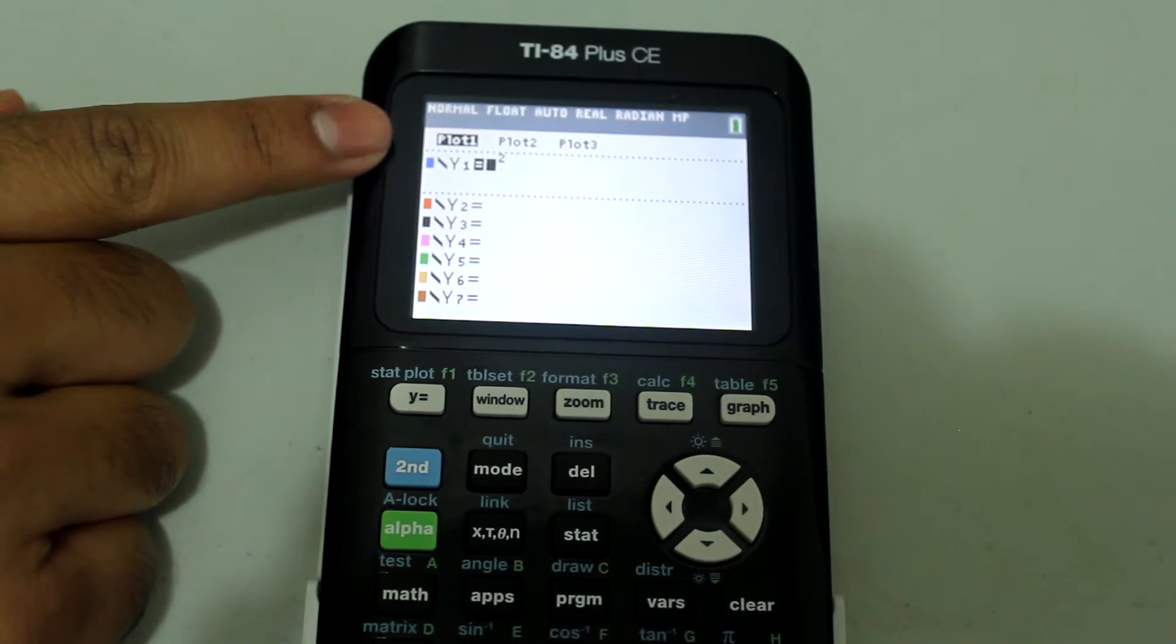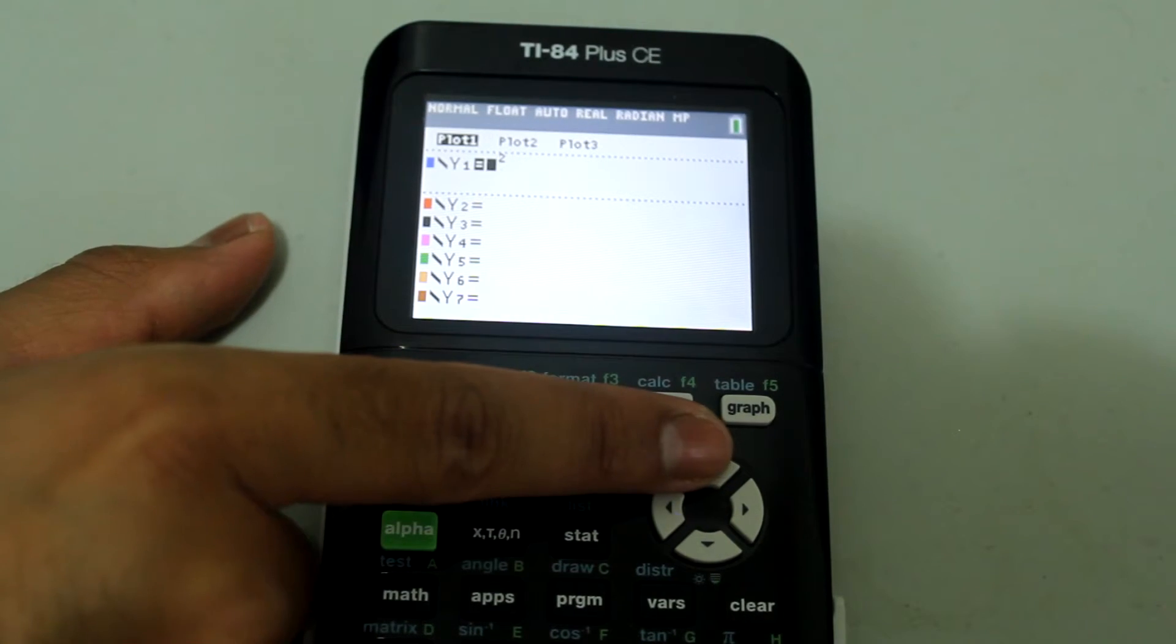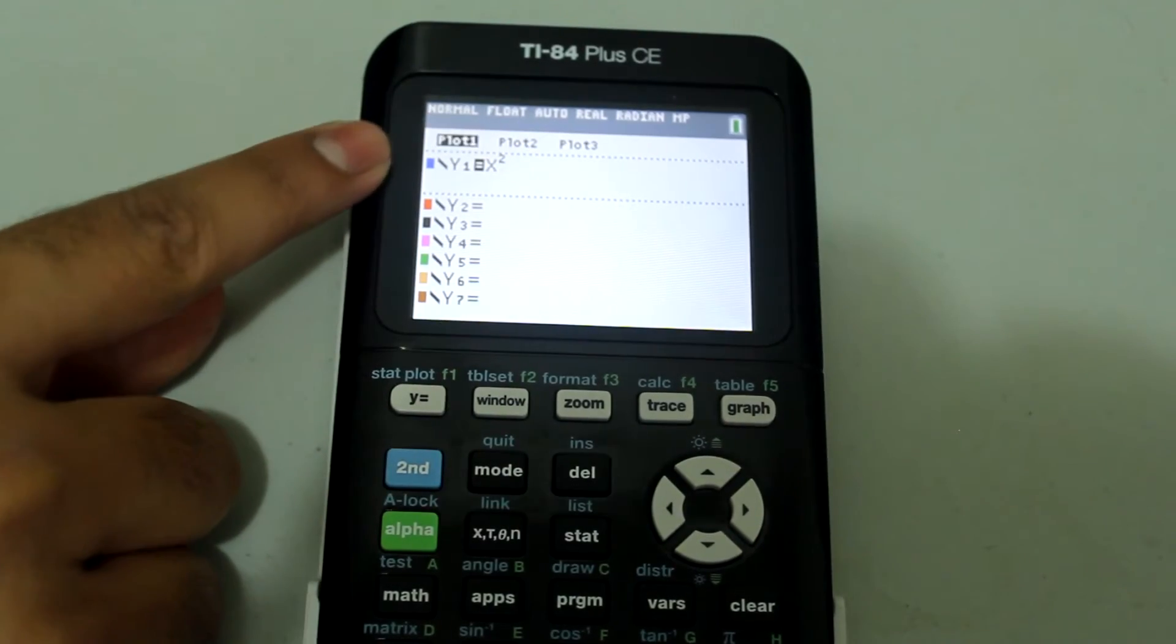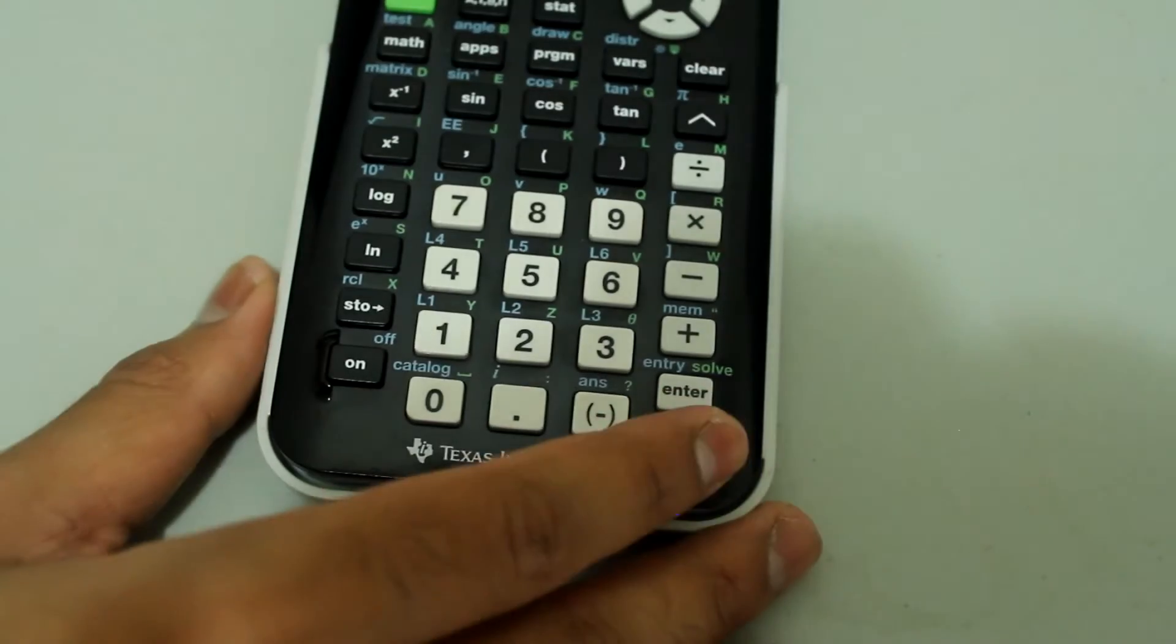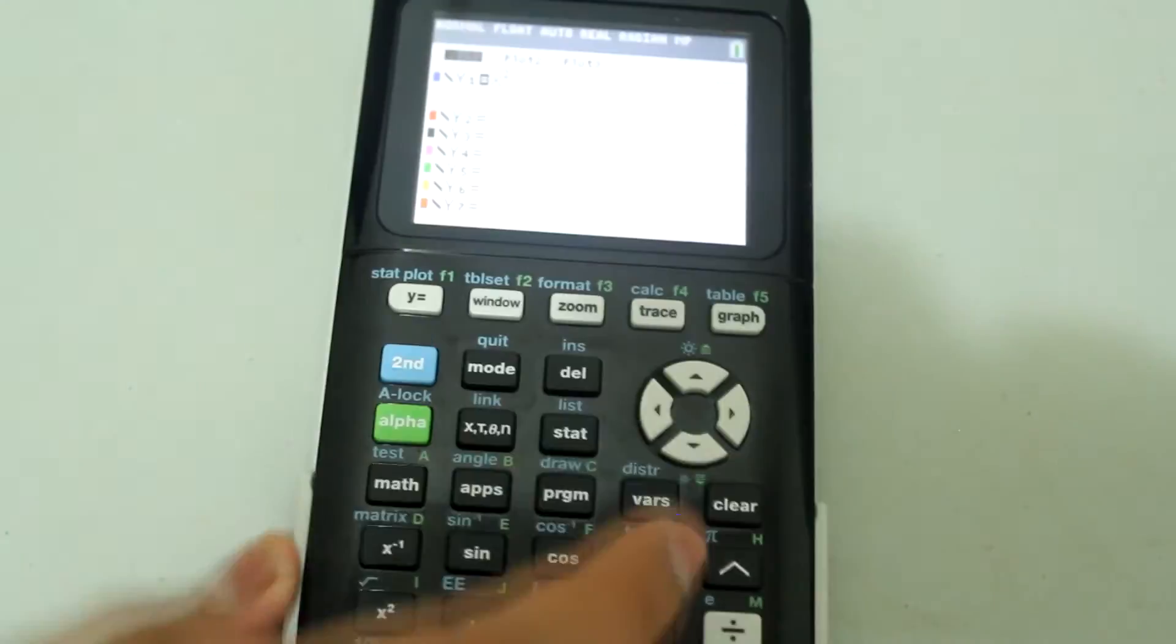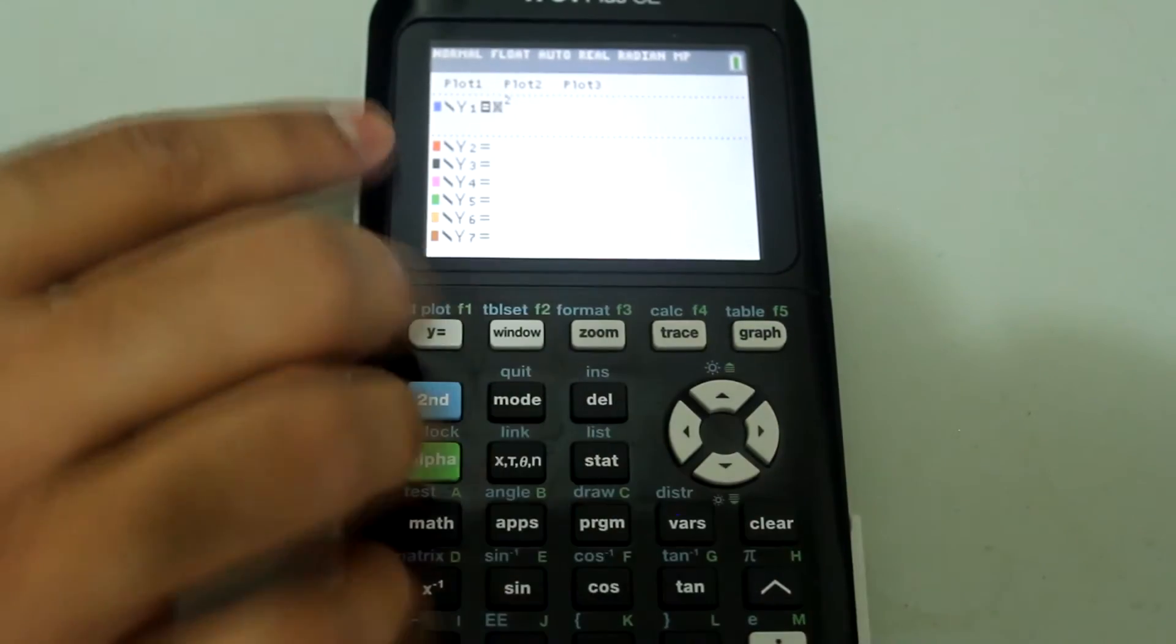Notice that plot 1 is highlighted. To turn that off, arrow up to plot 1 once the cursor is blinking on plot 1. Press enter to turn it off. And now if I arrow down, plot 1 is no longer highlighted.